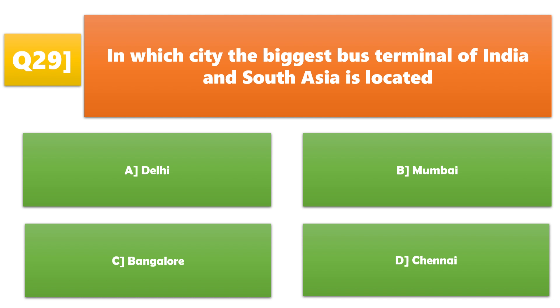In which city is the biggest bus terminal of India and South Asia located? A. Delhi, B. Mumbai, C. Bangalore, D. Chennai. A. Delhi is the correct answer.